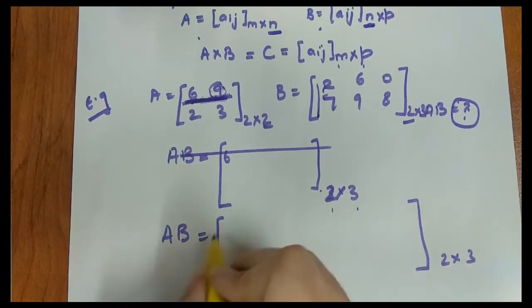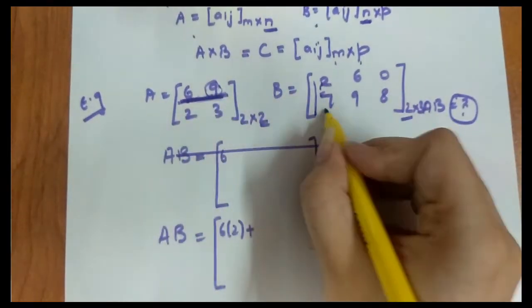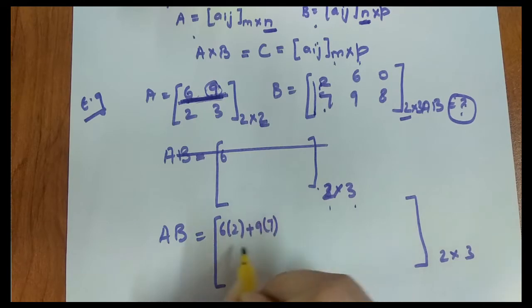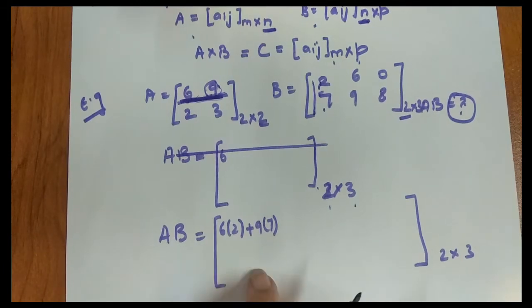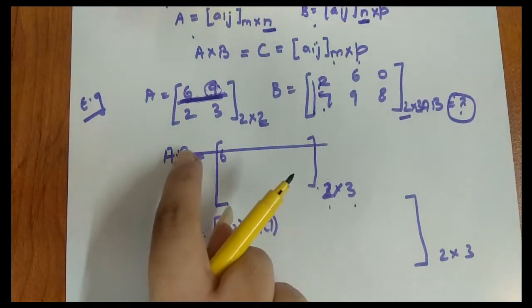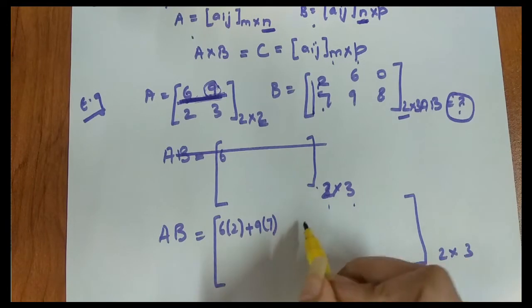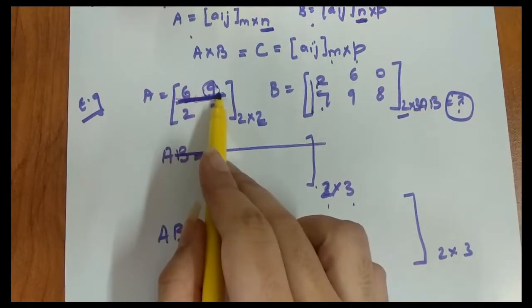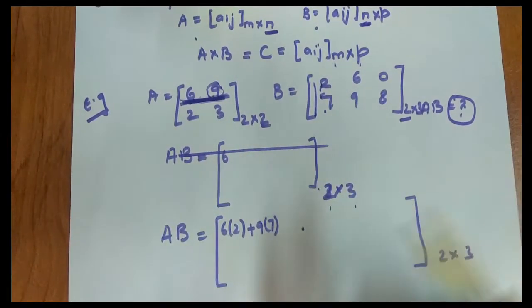2 cross 3. So first, we multiply 6 with 2, then 6 multiplies with 2 plus 9 multiplies with 7. This becomes the first element of the resultant matrix, first row first column. So you understand this element a_ij is first row first column. For the first matrix first row second column, we multiply with second matrix first column.